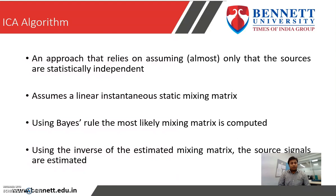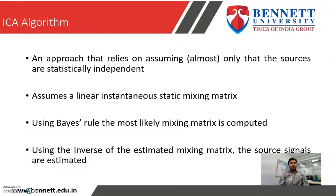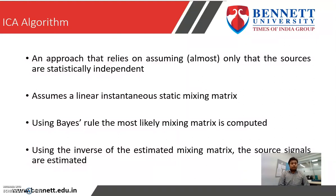How do we apply the ICA algorithm to separate these signals? In this algorithm, we assume a linear instantaneous static mixing matrix, and using Bayes' rule, the most likely mixing matrix is computed. We assume that the sources are statistically independent, and using the inverse of the estimated mixing matrix, the source signals are identified.